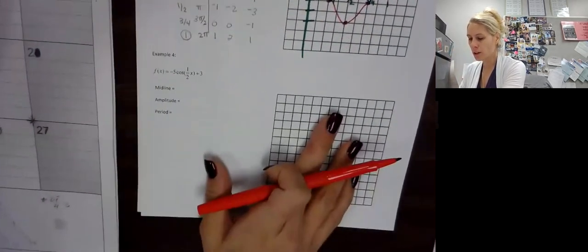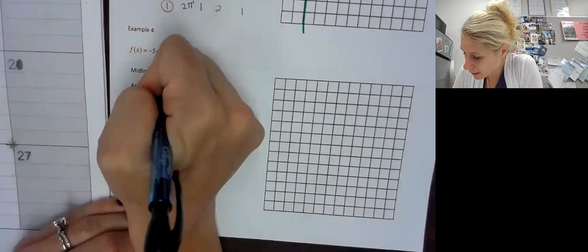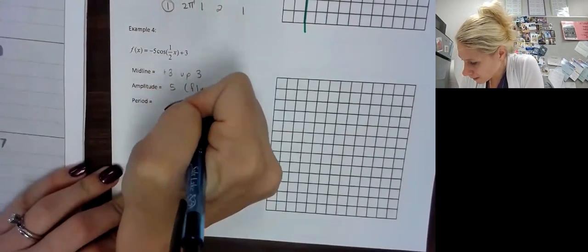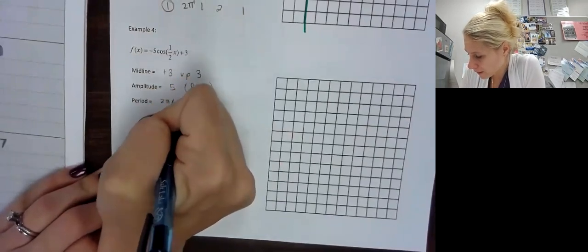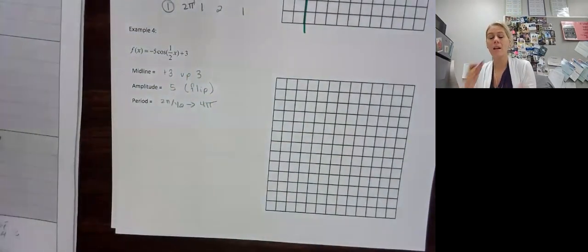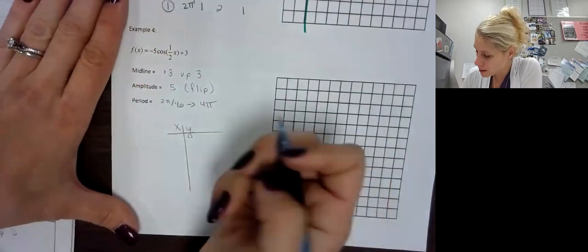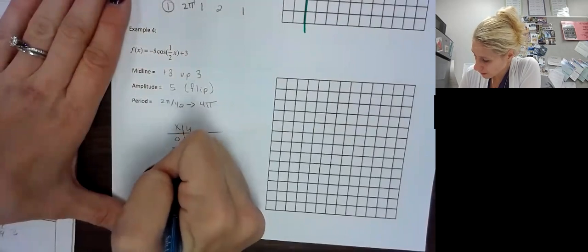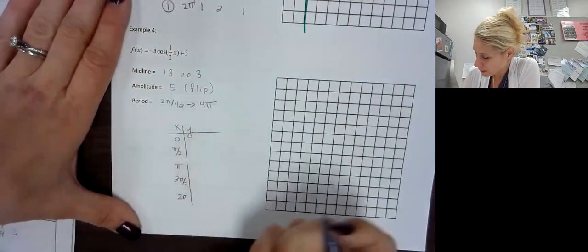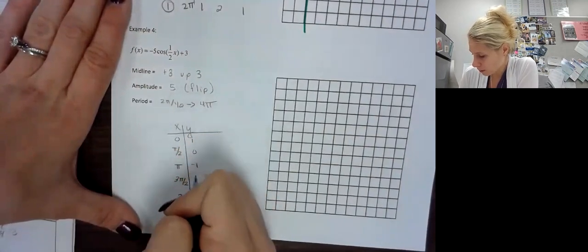Let's try one more. Example 4 is the same setup as example 2, but with cosine instead of sine. So our midline is still up 3, amplitude is still 5 — but remember, there's a flip. And our period, which is 2 pi divided by B, comes out to 4 pi. The parent function X values are 0, pi over 2, pi, 3 pi over 2, and 2 pi. This is cosine, so the Y values are 1, 0, negative 1, 0, and 1.